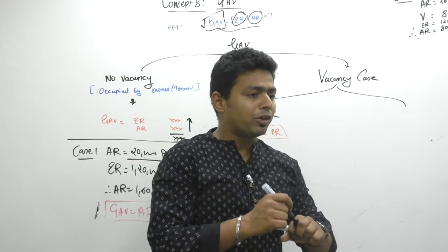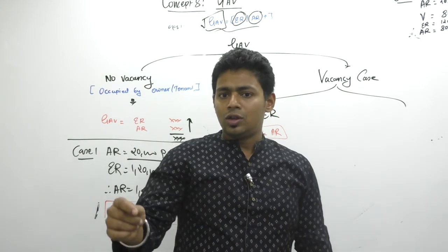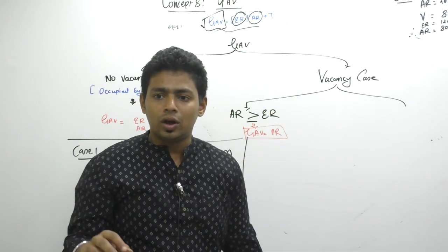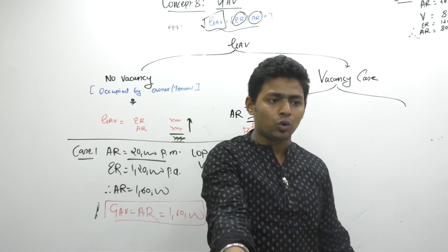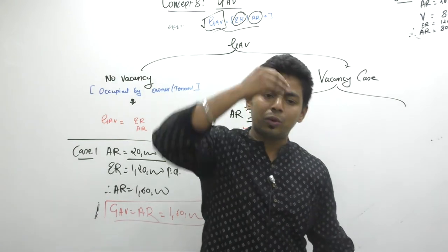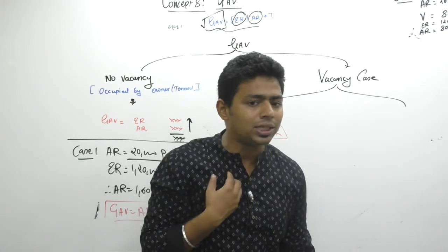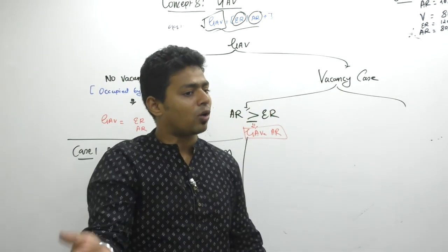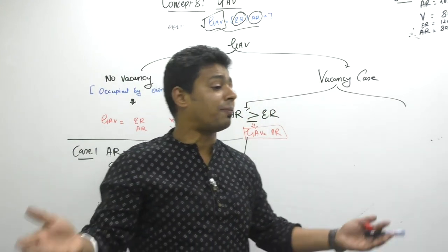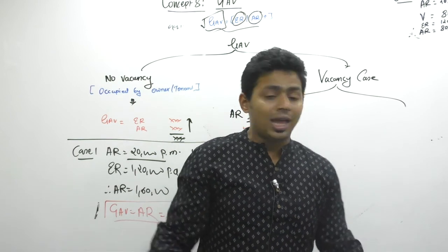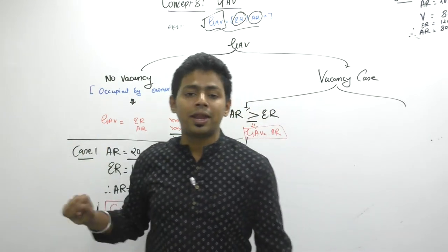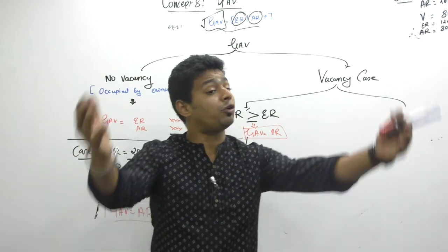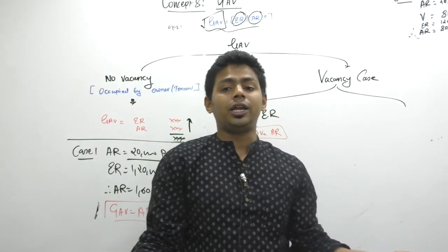Because if the property was vacant, nobody can stay in a property without electricity. So you can produce the electricity bill and show: sir, property was actually vacant. I am not lying. These are the 8-month electricity bills — see, electricity was not consumed. That means my property was vacated. And these two are my neighbors, sir. You ask them. My property was genuinely vacated, sir.